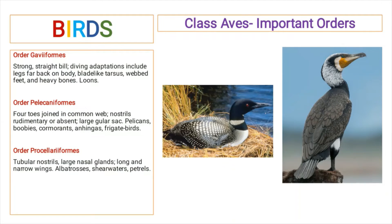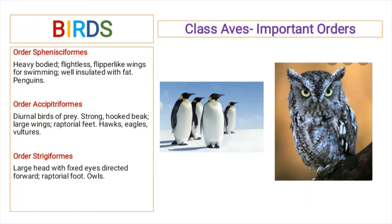Order Procellariiformes includes birds that have tubular nostrils, large nasal glands, and long narrow wings. These include albatrosses, shearwaters, and petrels. It means they use their sense of smell most of the time.